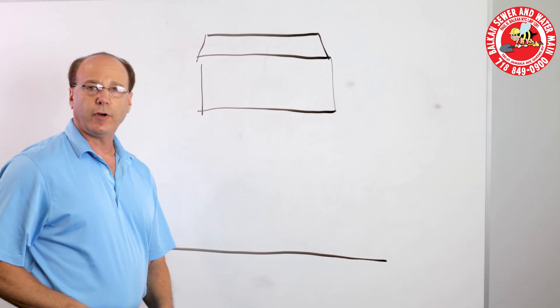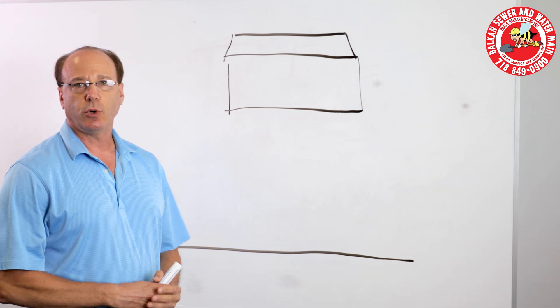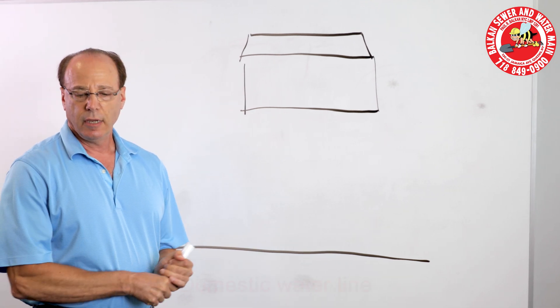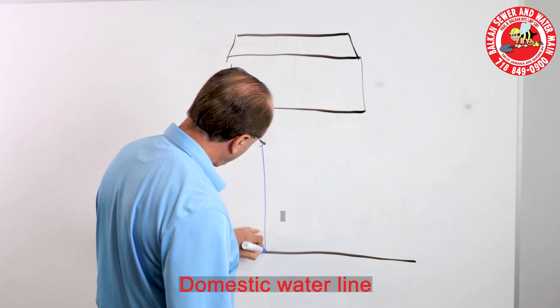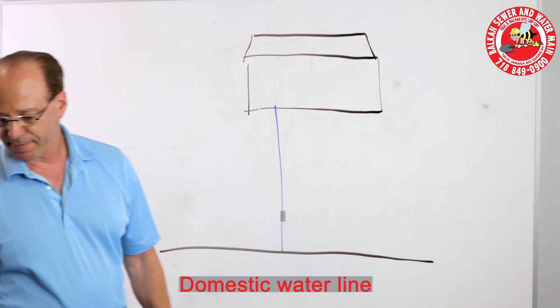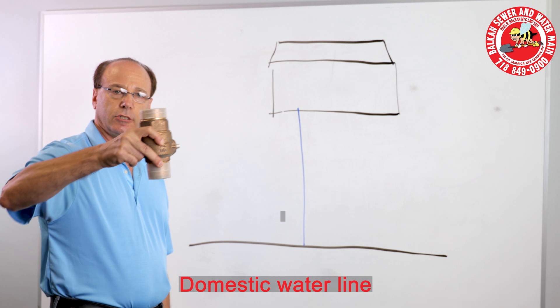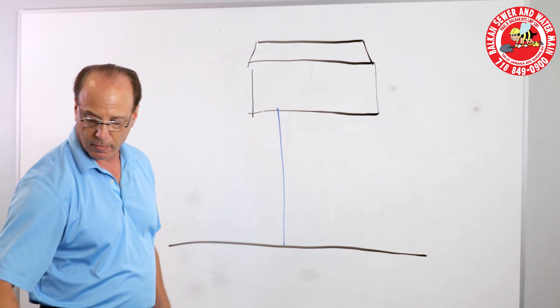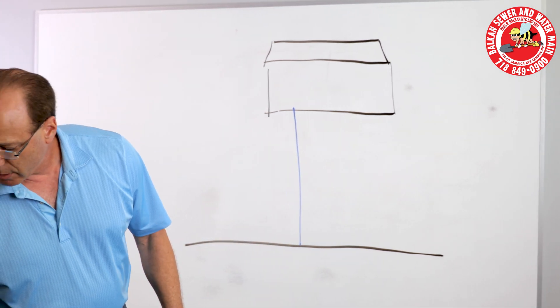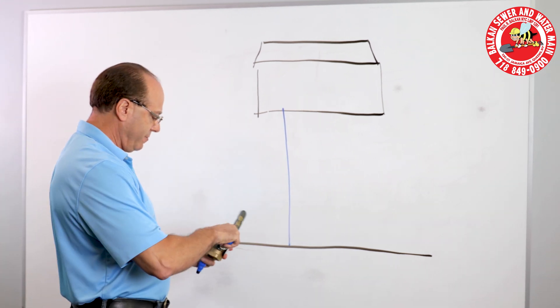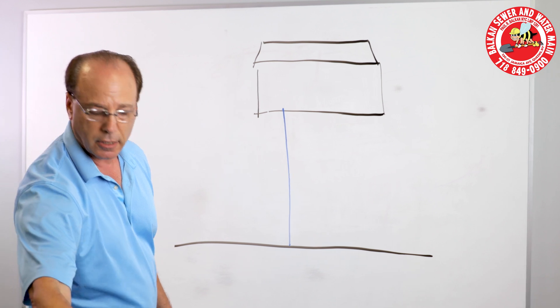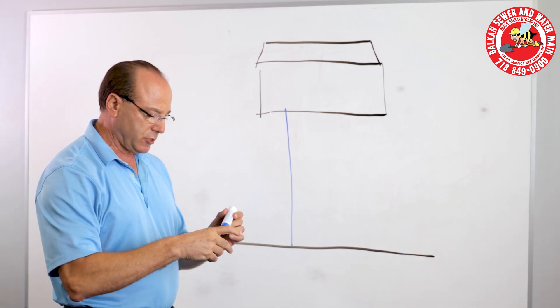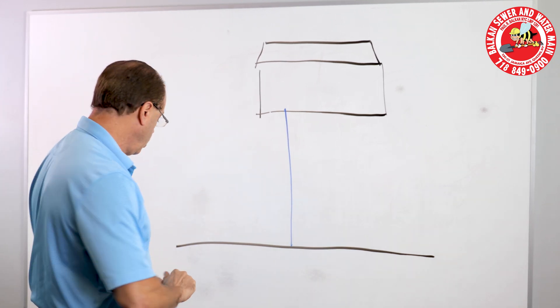Now, most folks have what's called a domestic water line. That means there's no fire protection in the building. A domestic water line would have a tap connection. This is what a tap connection looks like on the city water main. And it would have an inside valve. Usually, ball valves are used nowadays. That's your basic domestic water service line. That's one type.